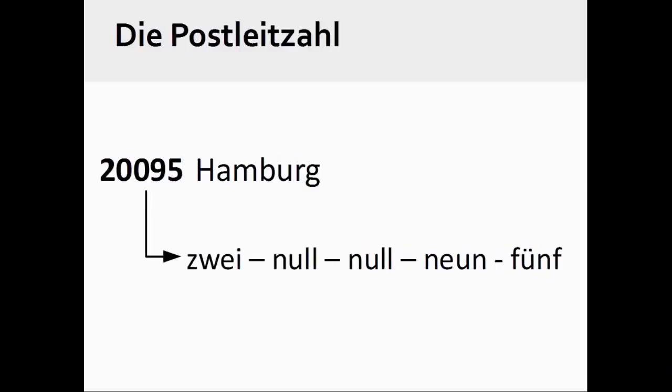However, this is not the case with larger numbers, such as one encounters with a German postal code or zip code. When speaking a German postal code, one expresses the numbers individually: zwei, null, null, neun, fünf.